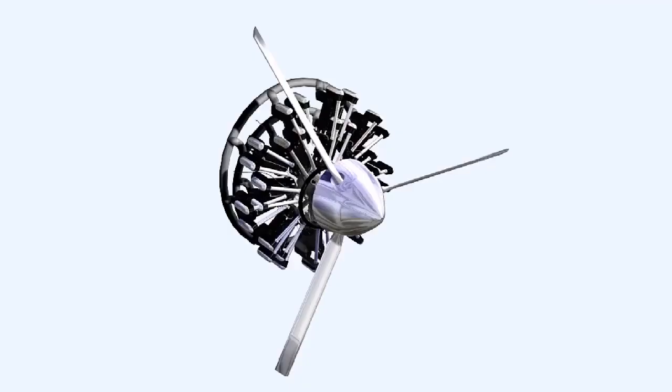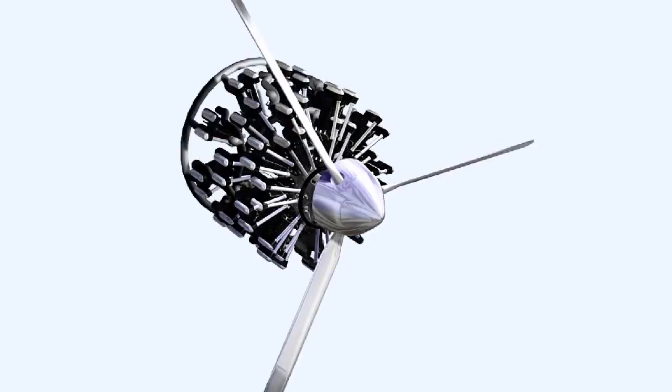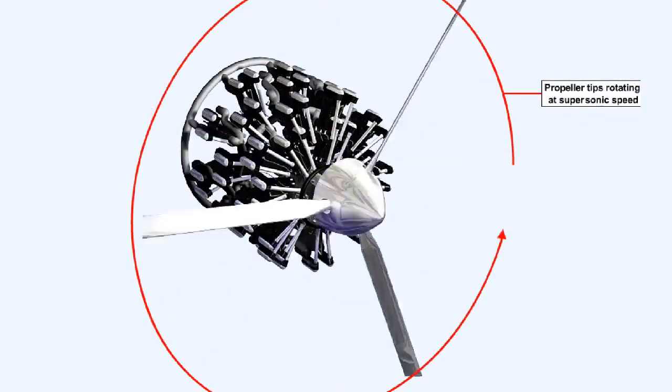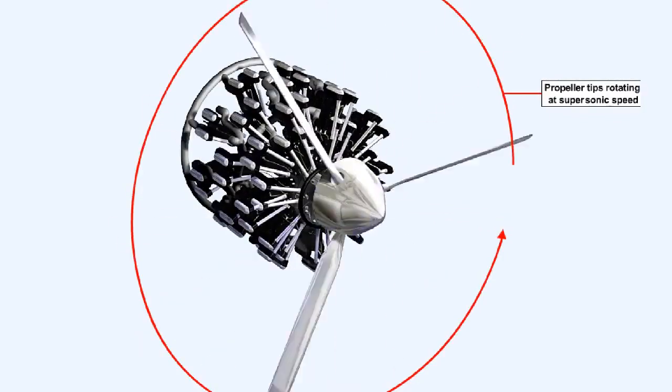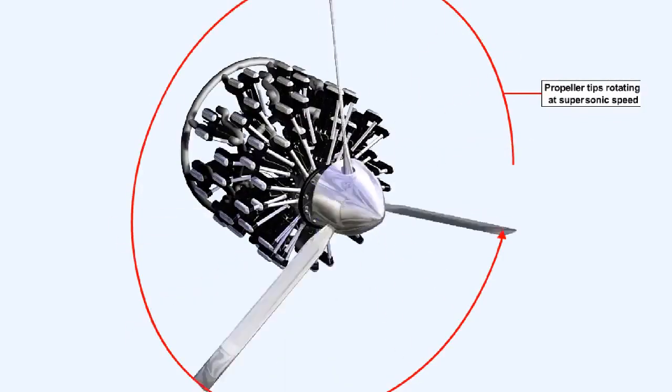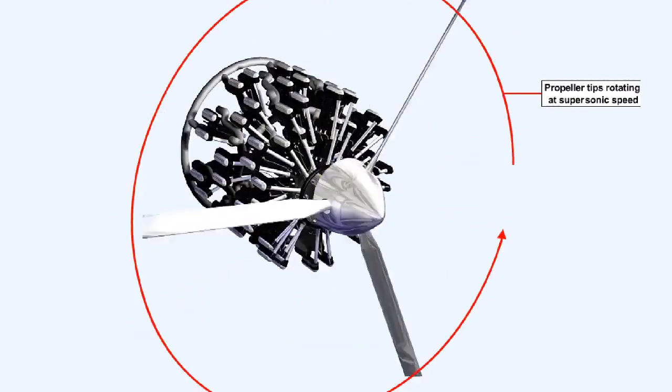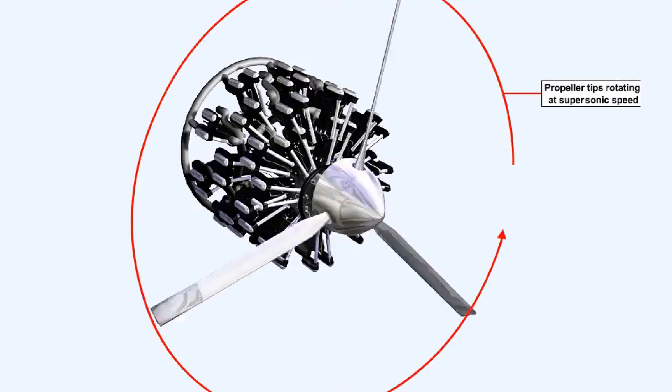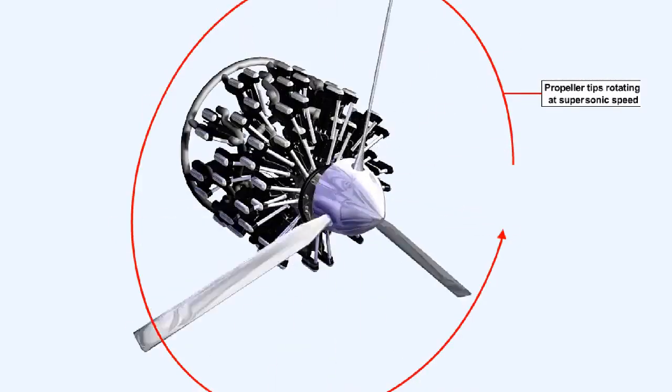The more powerful an aircraft engine becomes, the larger must be its propeller if it's to absorb the torque output of that engine. Unfortunately, if the propeller diameter is increased and the engine rotates at the same speed as it did previously, the propeller blade tips would be moving at sonic or even supersonic speed. This is very inefficient as well as being noisy and potentially damaging to the blades.